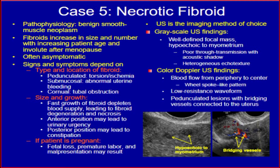Ultrasound is the imaging method of choice. Grayscale ultrasound findings of necrotic fibroid: well-defined focal mass, hypoechoic relative to myometrium, posterior acoustic shadowing, and heterogeneous echotexture. Color Doppler ultrasound findings: blood flow from periphery to center with a spoke-like pattern, low-resistance waveform, and pedunculated lesions with bridging vessels connected to the uterus.